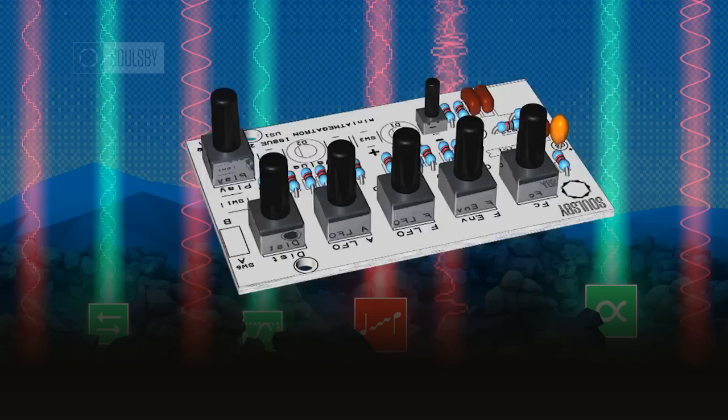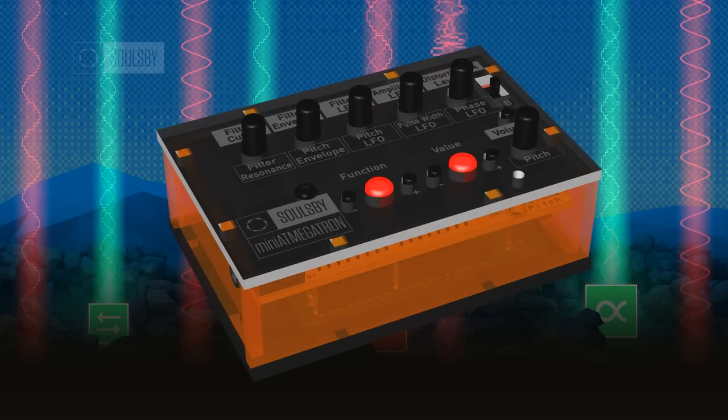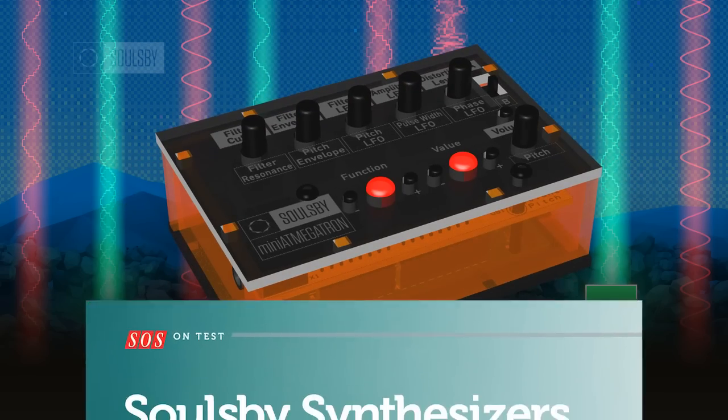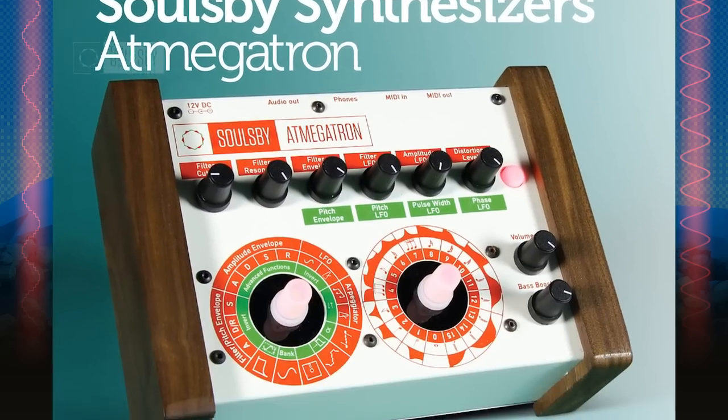The Mini App Megatron is an 8-bit synthesizer kit based around the Arduino Uno. As the name suggests, the sound and synthesis parameters of the Mini App Megatron are similar to its big brother, the App Megatron.